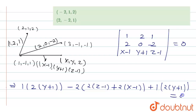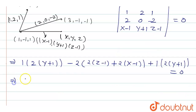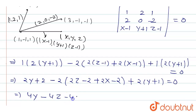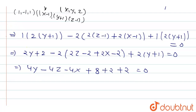Simplifying the expansion: we get 2y + 2 minus (4z - 4) plus (2x - 2) plus 2(y + 1) equals zero. Combining like terms: 2y + 2y gives 4y; the z terms give -4z; the x terms give -4x; constants: -2 - 2 = -4, and +8, +2, +2. This simplifies to: -4x + 4y - 4z plus a constant equals zero.